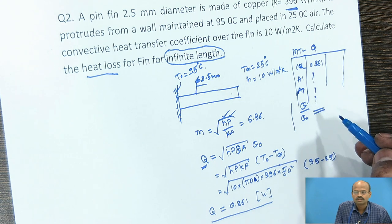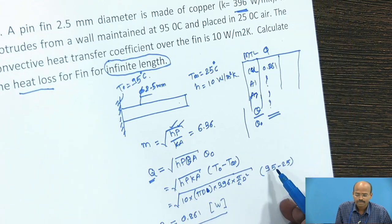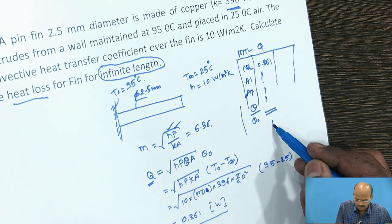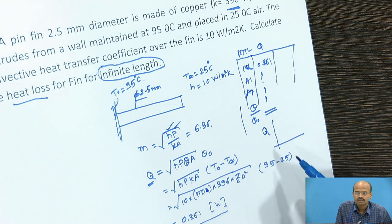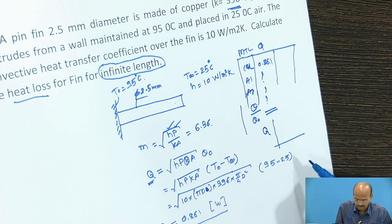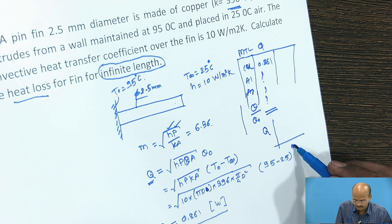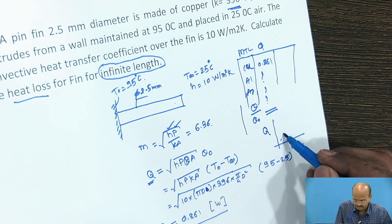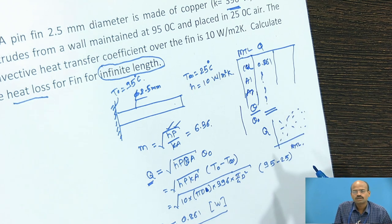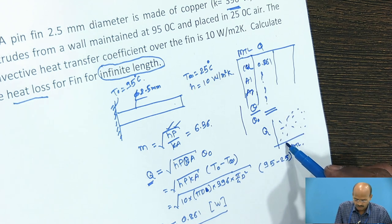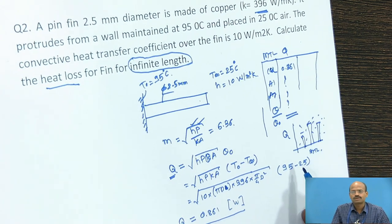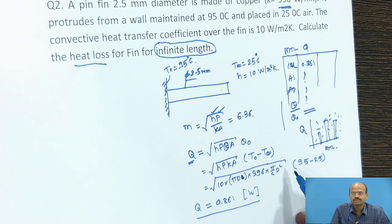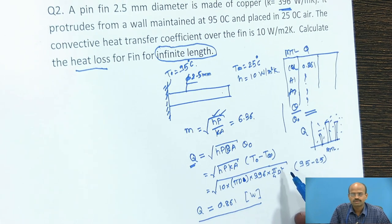For example, if the material is copper, we got the answer as 0.861. You can alter it, change the material. Instead of copper, you take the aluminum, find out the rate of heat transfer for gold, for silver, etcetera.